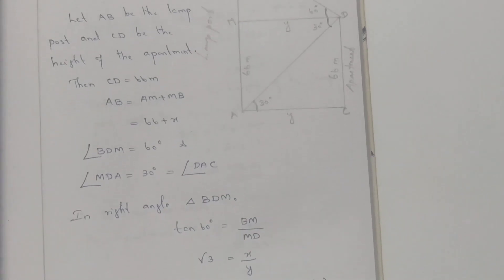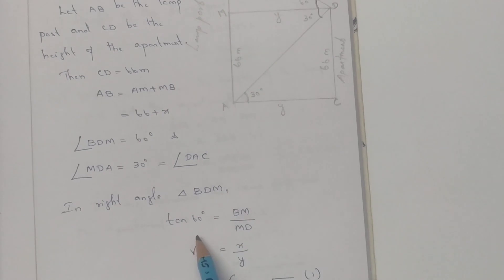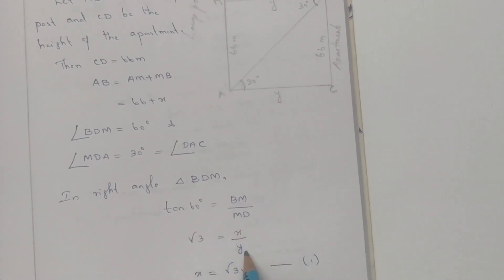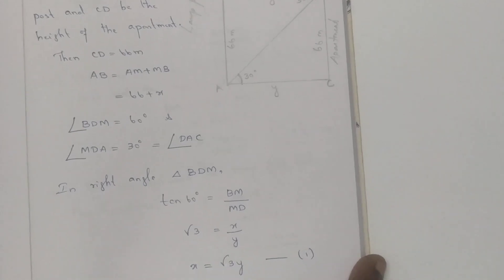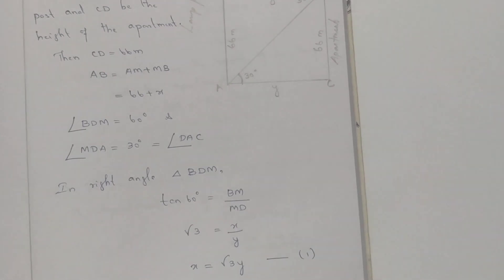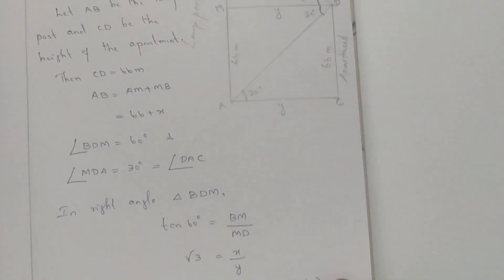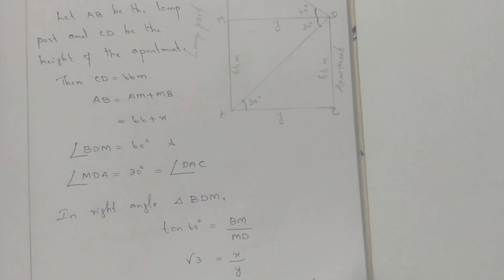tan 60 equals BM by MD, so root 3 equals X by Y. Therefore X equals root 3Y. This is equation 1. X equals root 3Y is the first equation.